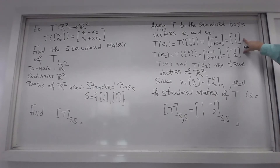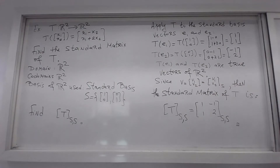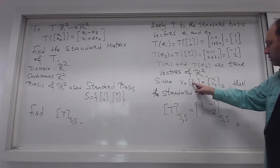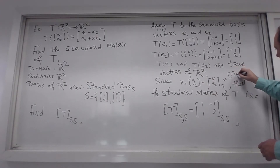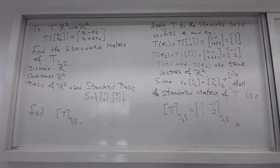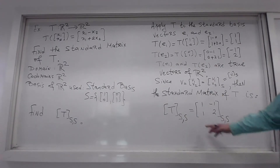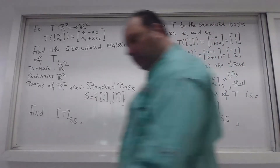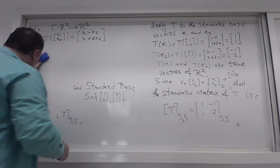What we know about vectors in R2 is that the components of the vector are the same as the coordinates of the vector in the standard basis. This is true for all vectors in Rn: the entries, the components, are equal to the coordinates of that vector in the standard basis S. So this equals v_S. The standard matrix is simply these two images placed in columns in correct order.